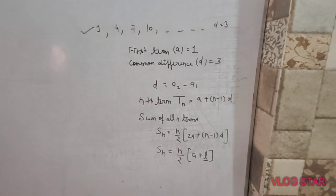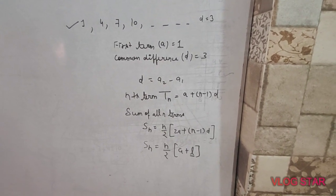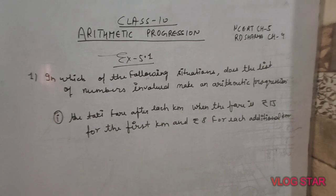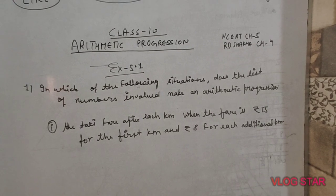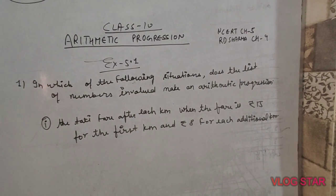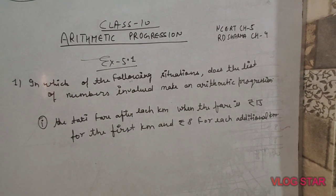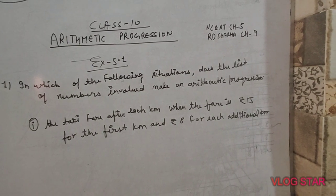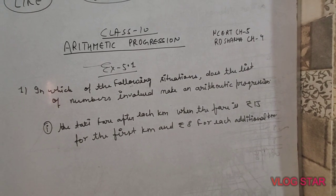We will use these formulas and then move to NCERT questions. Now I have started the exercise — Exercise 5.1 from NCERT. The first question asks: in which of the following situations does the list of numbers involved make an arithmetic progression? Several situations are given, and we need to identify which ones form an AP.